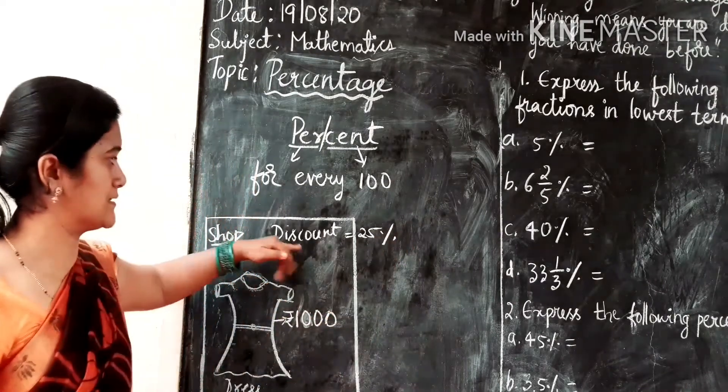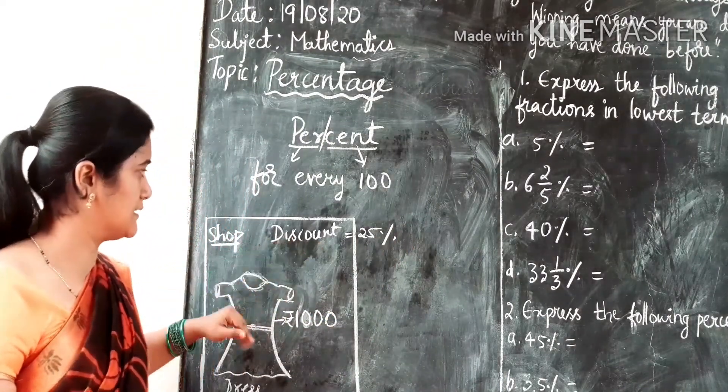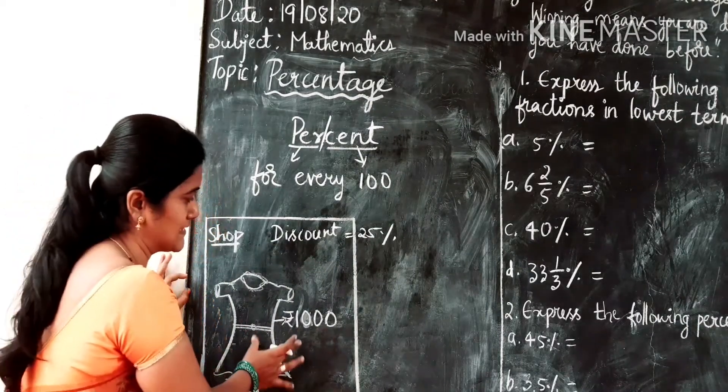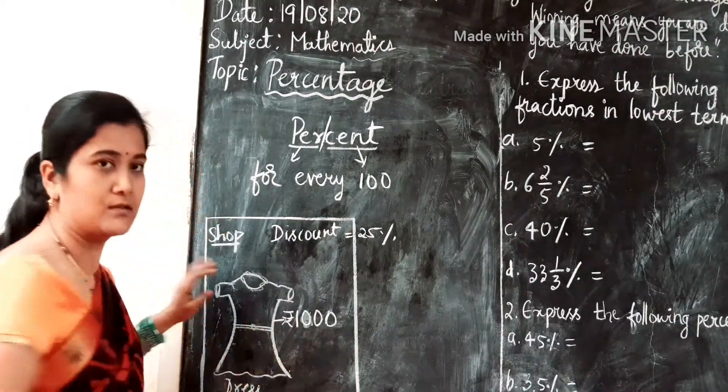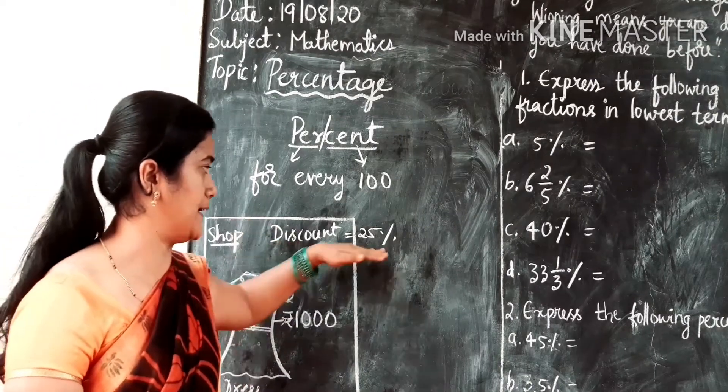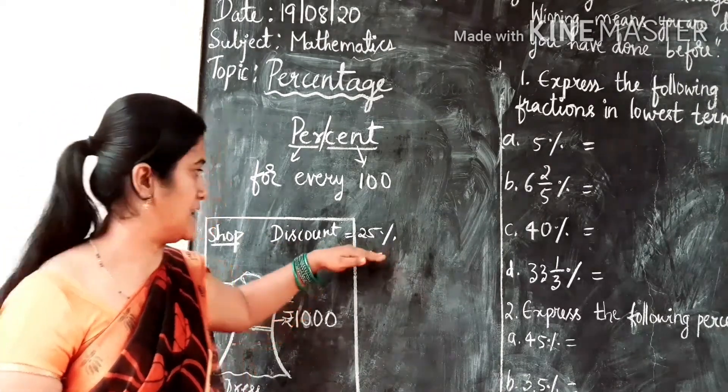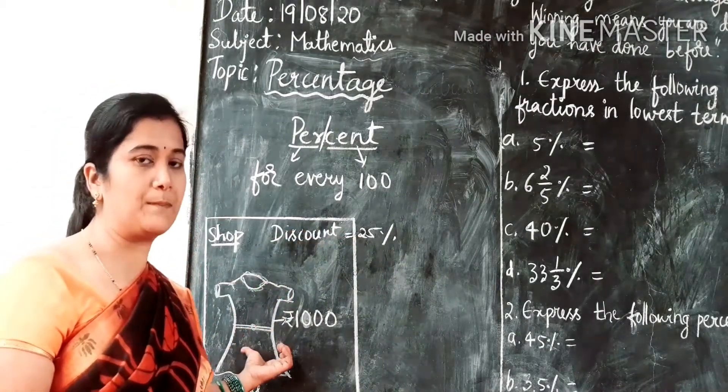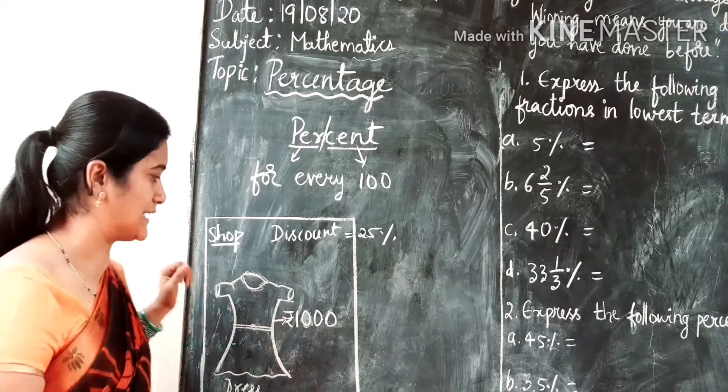So what does discount mean here? Discount means the shop is going to lessen the value of the fixed price of this dress. So the discount given by the shop is 25 percent. Then if it gives 25 percent as discount, then what will be the actual price of the dress? Let us calculate.